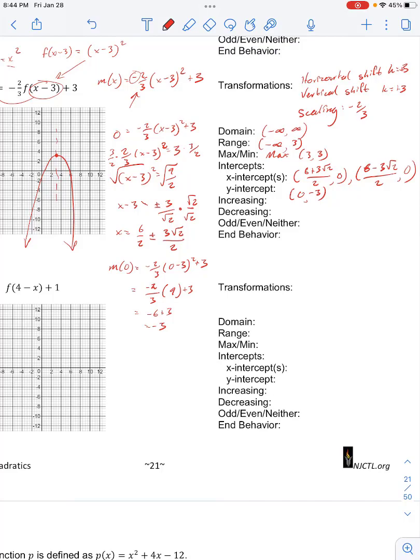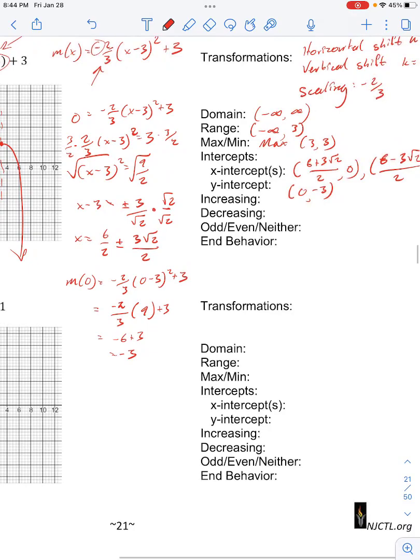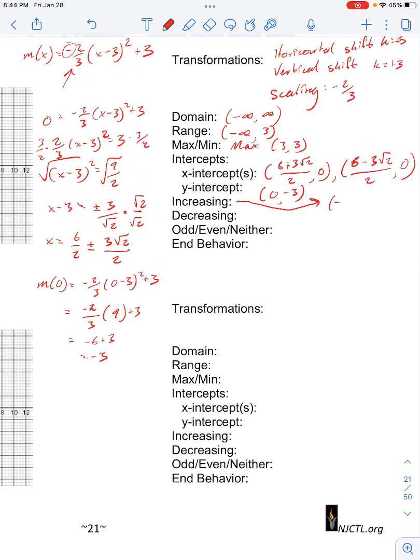Our function is increasing from negative infinity to our vertex. So from negative infinity to the vertex at 3, decreasing from 3 to infinity.